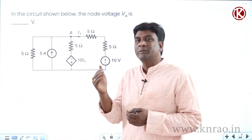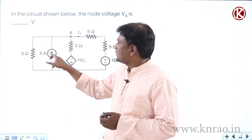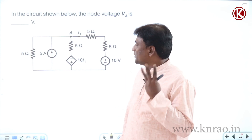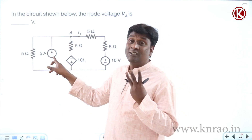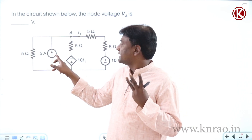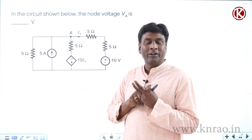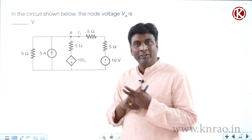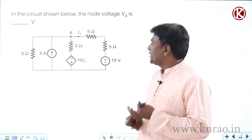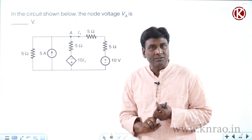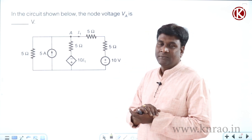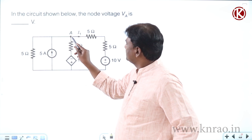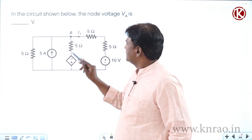Let us go with mesh analysis. How many meshes are there? One, two, three — three meshes. Out of three meshes, one current source is there, which means a super mesh will be formed. One relation will come: if it is i1 and i2, then i2 minus i1 equals 5 amperes. So you are supposed to write two equations if you go with mesh analysis.